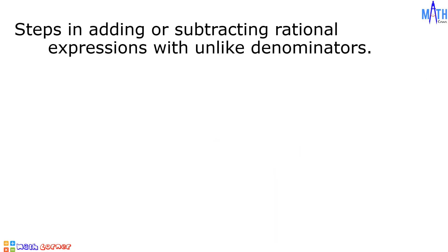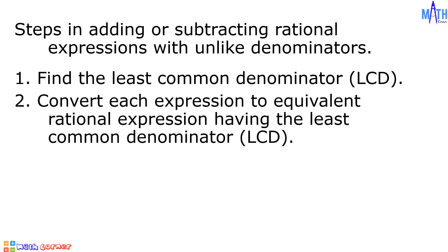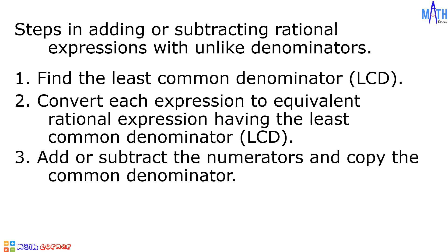Let us begin with the steps in adding or subtracting rational algebraic expressions with unlike denominators. Step number one, find the least common denominator or the LCD. Number two, convert each expression to an equivalent rational expression having the least common denominator. Number three, add or subtract the numerators and copy the common denominator. And number four, simplify. Let us have some examples.